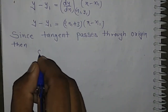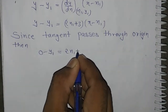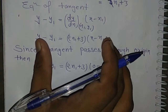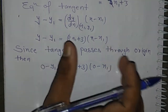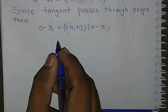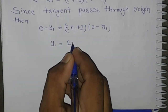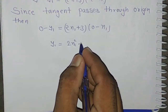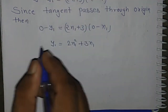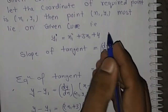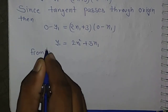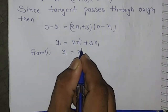Substituting the origin: 0 − y₁ = (2x₁ + 3)(0 − x₁). Since the tangent passes through origin, (0, 0) satisfies the equation of tangent. This gives us: y₁ = x₁² + 3x₁, which is our second equation.